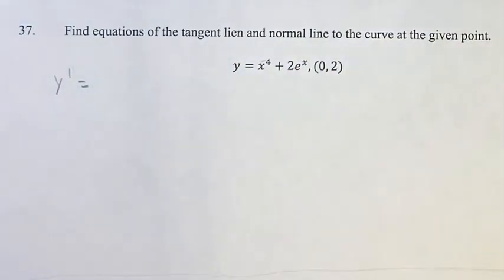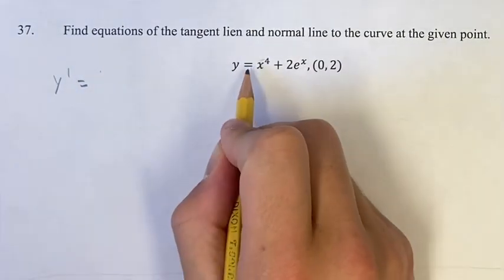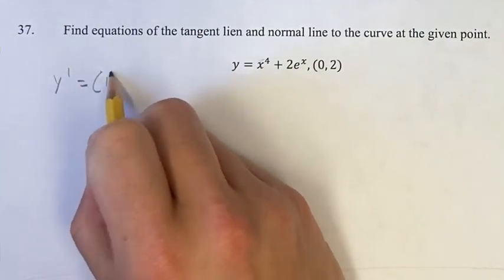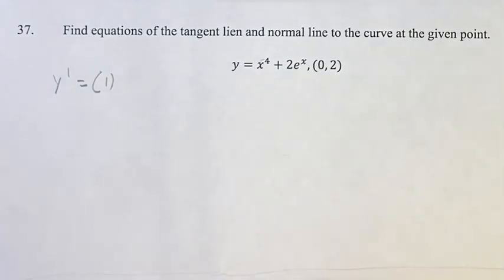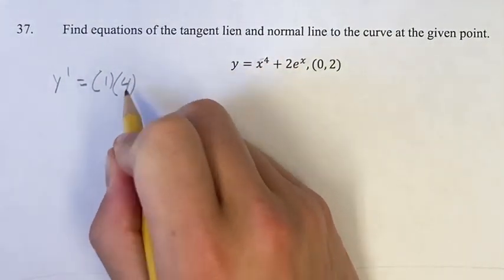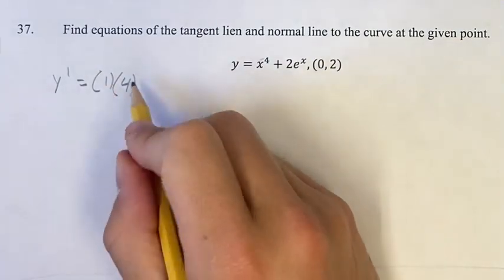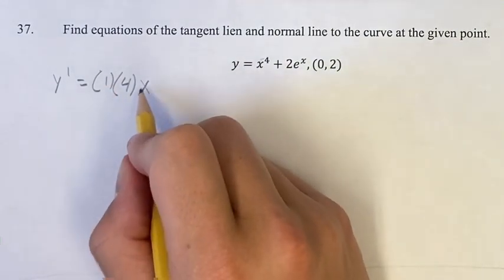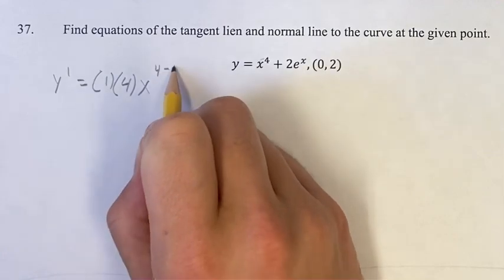Right here we have a power function. So what we do is we take the coefficient, we just have 1x to the 4th, so the coefficient is 1, even if it's not marked. Then you bring down your exponent, so bring down 4, multiply it by your coefficient, and then your new exponent, x to the 4, our old one, minus 1.